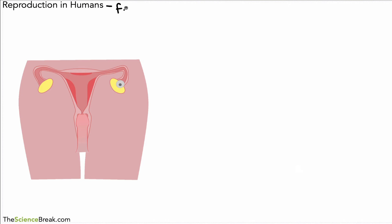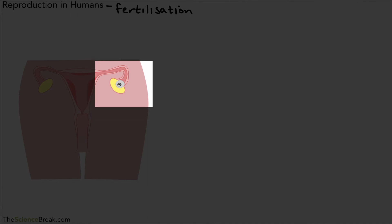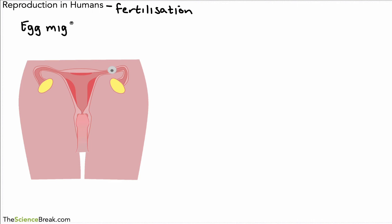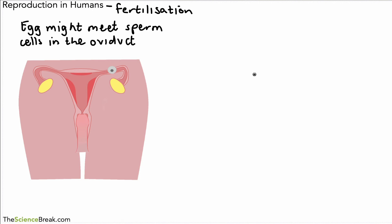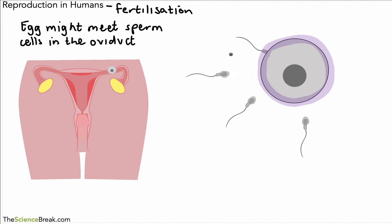Let's look at what happens with fertilization — the joining of an egg cell and a sperm cell. Here you can see an egg cell just being released by an ovary; it's slightly larger than it actually is, not quite to scale. That egg is released and moves down the oviduct, where it might meet sperm cells. If sperm and egg cells are present at the same time, one sperm cell will very likely get into the egg.